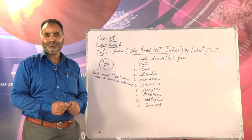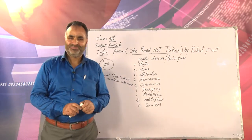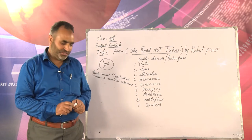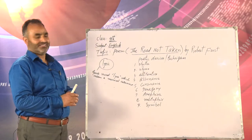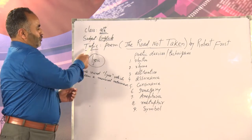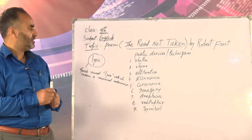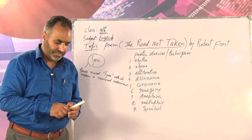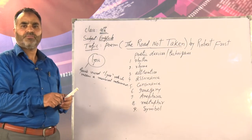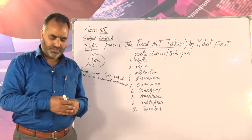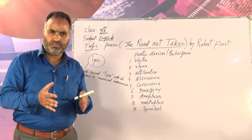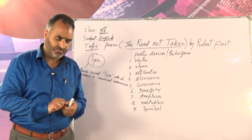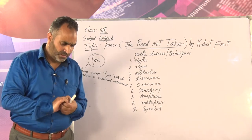Assalamu alaikum dear students, how are you? I hope you are enjoying. Go to page 64 of your book. I am in class 9th, subject English, and the topic is a poem. The name of the poem is 'The Road Not Taken' by Robert Frost. It is at page number 64 and 65 of your book. Keep the book ready in front of you, and also keep your rough notebook with you and a pen ready, as you may have to write here and there.